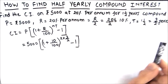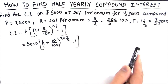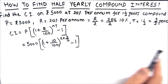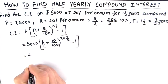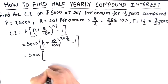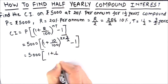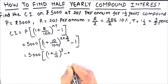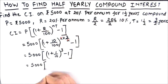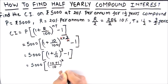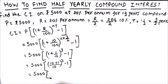Remember that when we calculate compound interest half yearly, the rate and time — which are per annum quantities — are converted to half-year quantities. The rate is now 10% and time becomes 3 half years. So we have 5,000 × [(1 + 10/100)^3 − 1]. Simplifying 10/100 gives 1/10, and combining over LCM of 10 gives (11/10)^3.